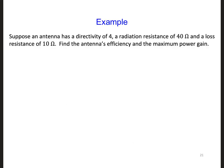Let's work through an example. Suppose an antenna has a directivity of 4, a radiation resistance of 40 ohms, and a loss resistance of 10 ohms. Find the antenna's efficiency and the maximum power gain.